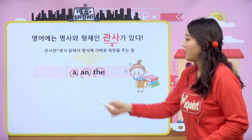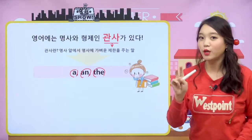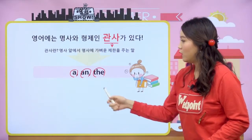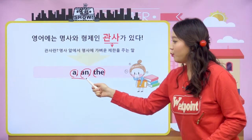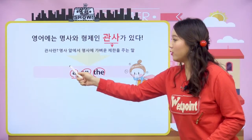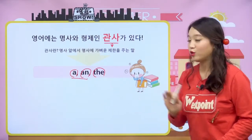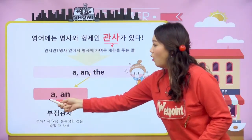그런데 관사란 무슨 뜻이냐? 관사란 명사 앞에서 명사에게 가벼운 제한을 주는 말입니다. 명사에게 가벼운 제한을 준다고? 관사는 a, an, the 이 세 가지가 있습니다. 그런데 이 세 아이는 다시 두 개로 나누어져요.